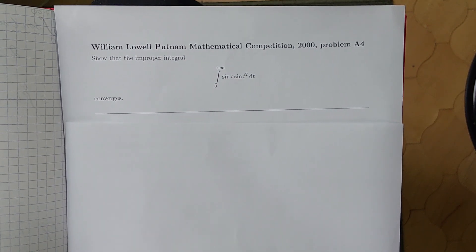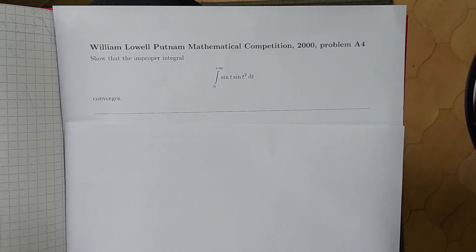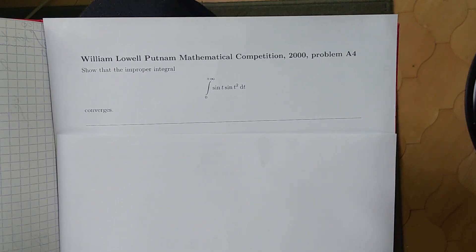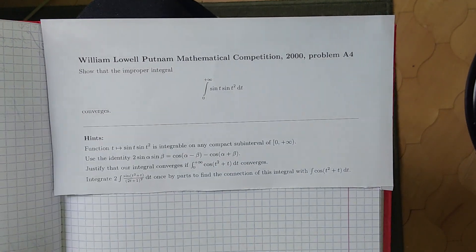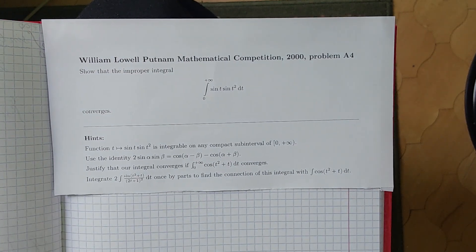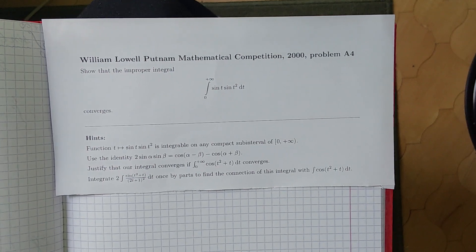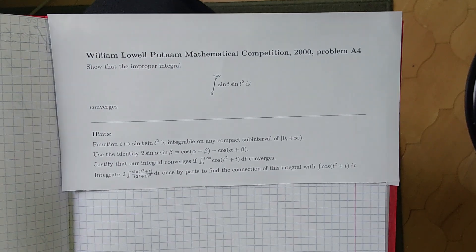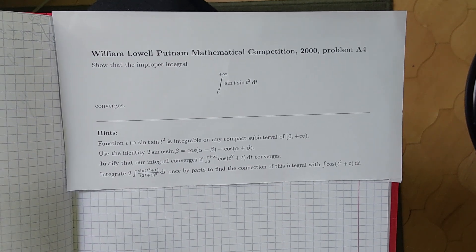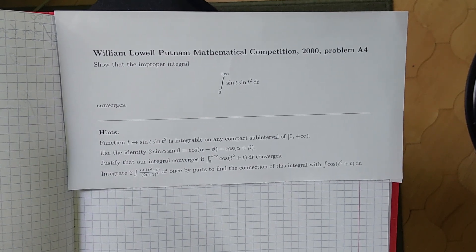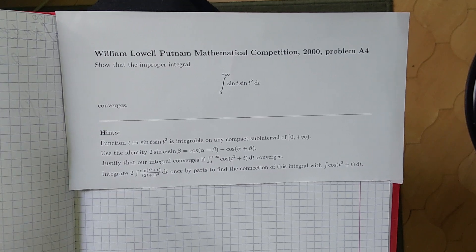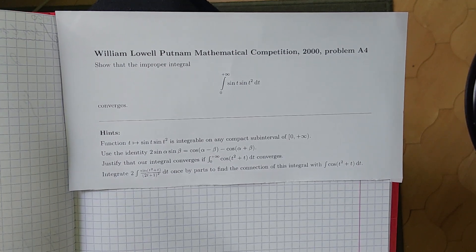As you can see, we are doing this in a different style — one of a kind. I hope that you will enjoy it. So here are my hints. First, notice that the function which maps t to sine of t times sine of t squared is integrable on any compact sub-interval of 0 to plus infinity.